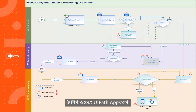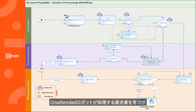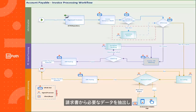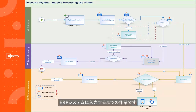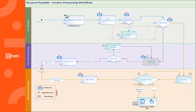In this demo, we will use UiPath apps to automate invoice processing where an unattended UiPath robot looks for invoices that need to be processed, extracts the required data from the invoice, processes the invoice, and finally submits it into an ERP system — in this case, SAP.